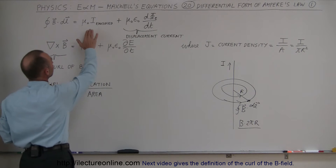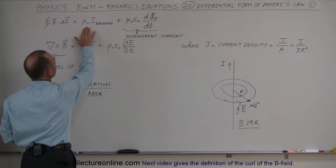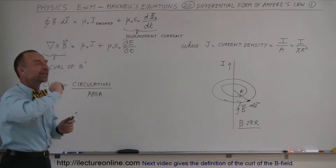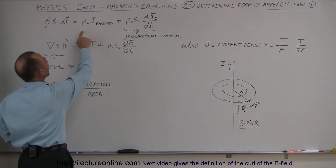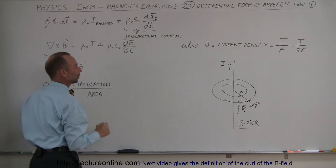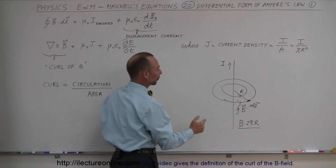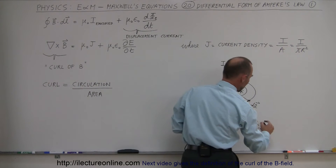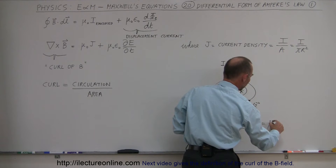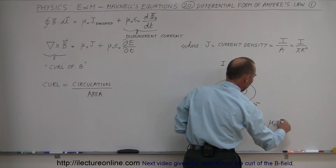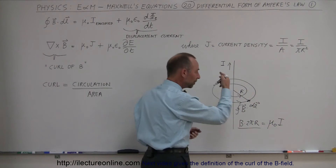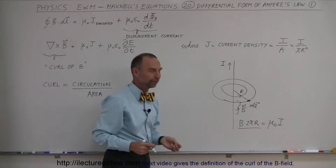That is also known as Ampere's law, and it always equals μ₀ — the permeability of free space — times the current enclosed. So this equals μ₀ times the current inside the wire.